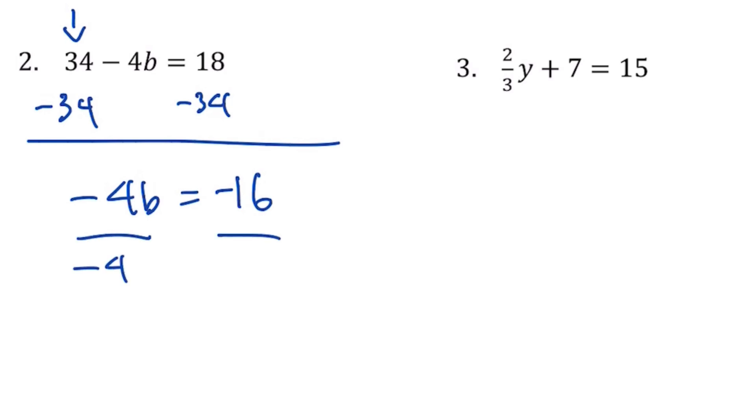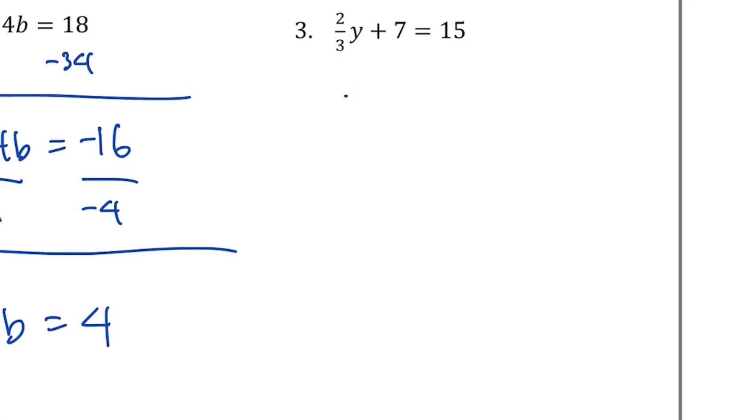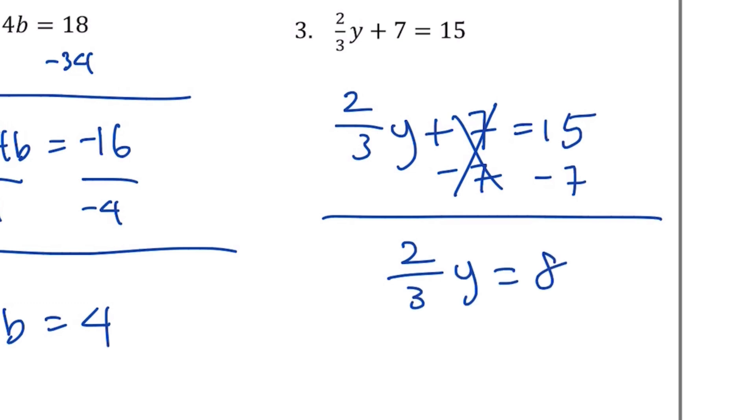Here I have two-thirds y. I'm going to rewrite this actually because I need some space. Equals 15. I'm going to subtract 7 from both sides. That way this goes away and I have two-thirds y equals 8. Now people see the fraction and freak out, but the rules are still the same. You're going to divide by two-thirds or multiply by the reciprocal, same thing.